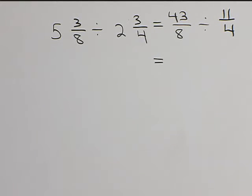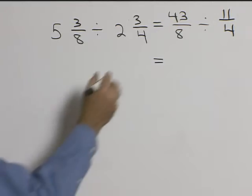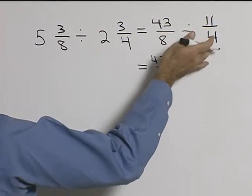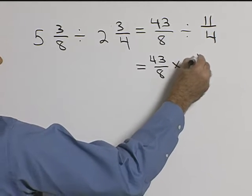Now what's next? We'll rewrite the first fraction as forty-three over eight times we'll flip eleven-fourths and get four-elevenths.